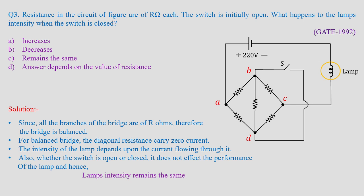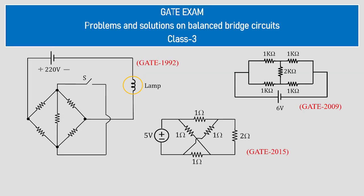This is a very important concept — it was asked in GATE 1992, repeated in GATE 2009, and again in GATE 2015 Set 1. That is why this class was taken. In the next class we'll see more numerical problems based on this repeated concept, and also what happens when the bridge is unbalanced — that is what we'll cover in further classes.